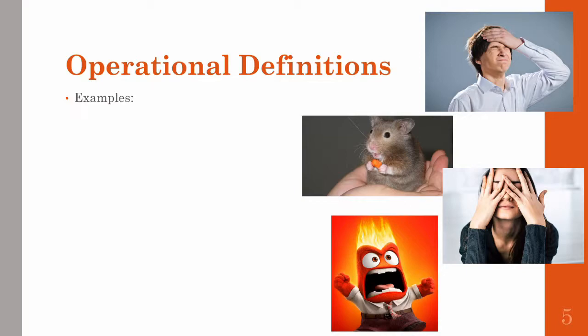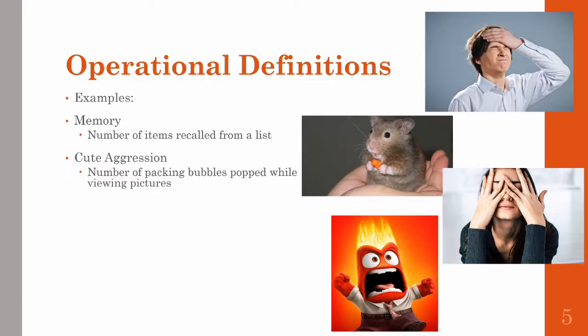To nail this concept down, let's go over just a few more examples. Say we want to measure memory. We can operationalize it by saying memory is the number of items recalled from a list. Cute aggression is kind of a weird phenomenon where people have this aggressive feeling when they see a cute animal or a baby or something like that.